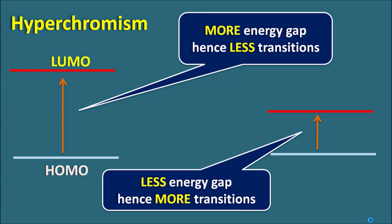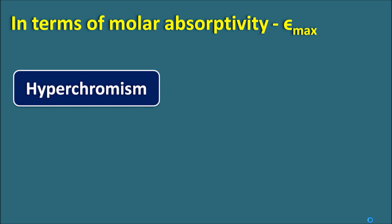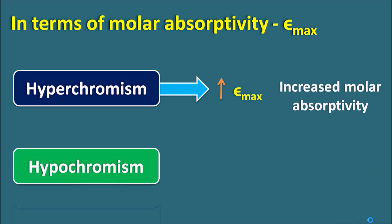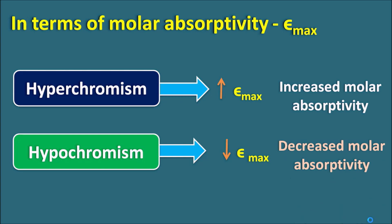Bathochromic shift is always linked with hyperchromism — whenever a bathochromic shift occurs, it also increases the molecule's capacity to absorb, so hyperchromism increases. Hyperchromism is defined in terms of molar absorptivity, indicated by epsilon max — the intrinsic capacity of a molecule to absorb electromagnetic radiation. Hyperchromism is an increase in epsilon max. Similarly, hypochromism is a decrease in epsilon max, indicating decreased molar absorptivity. Note: hypochromism relates to reduced epsilon max, whereas hypsochromic shift relates to reduced lambda max. Bathochromic shift is linked with hyperchromism, and hypsochromic shift is linked with hypochromism.